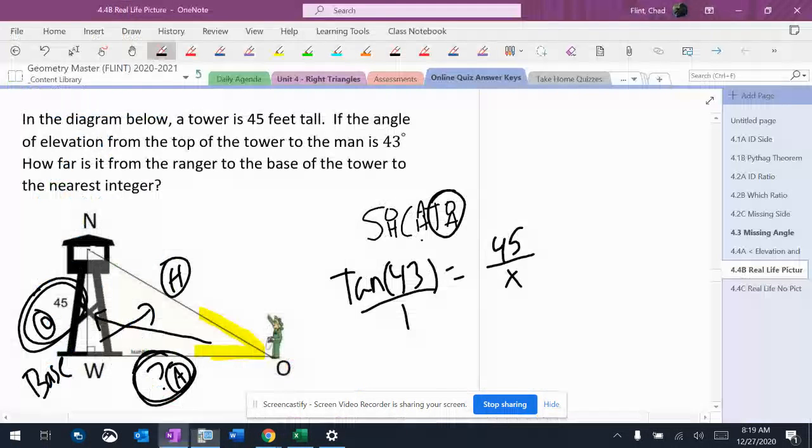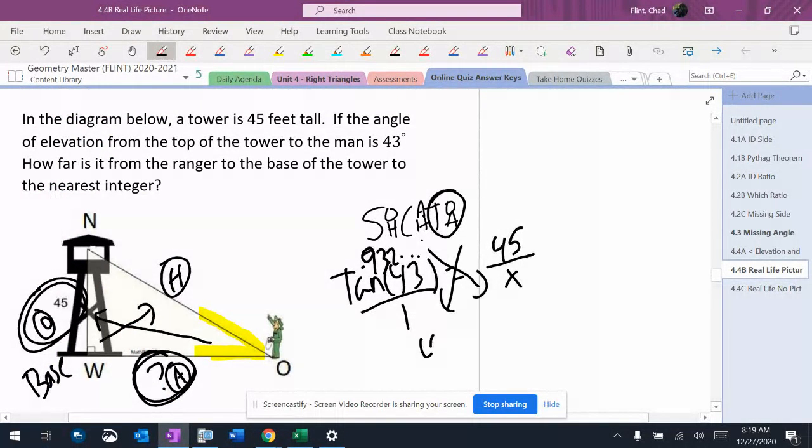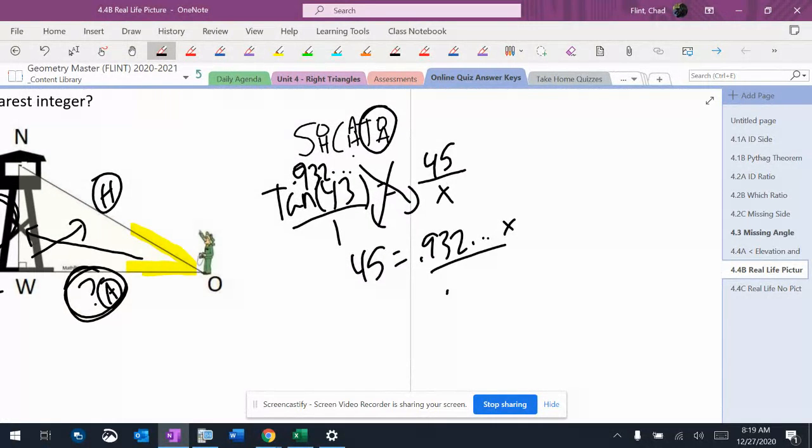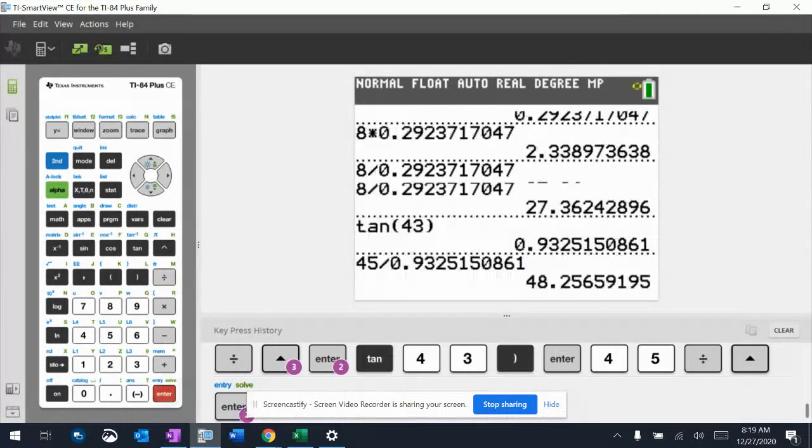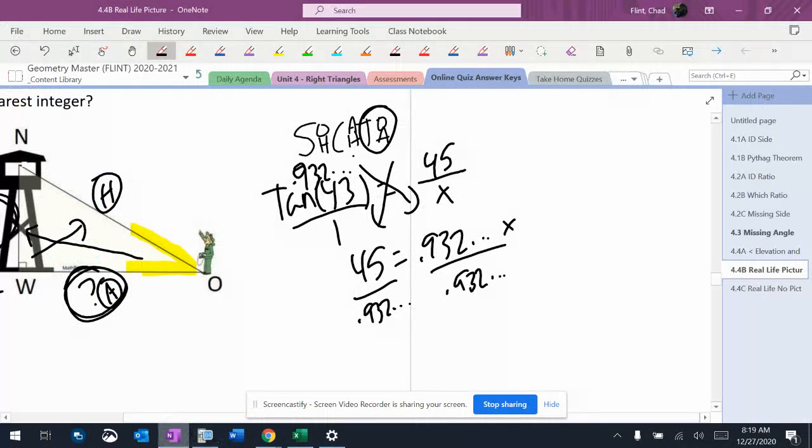0.932. And then when I cross-multiply, it's the slightly longer one that I do have to divide. 48.256.